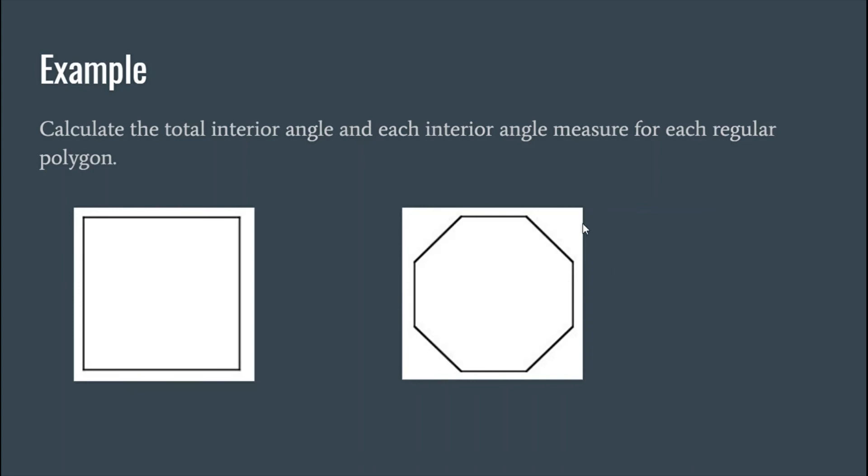So all these angles in here add up to 1080 degrees. To find the measure of each interior angle, we're going to take the total angle, 1080, and divide it by the number of sides, which is 8. So 1080 divided by 8, each of these interior angles will be 135 degrees. It's pretty simple and straightforward.